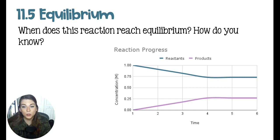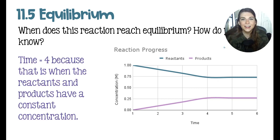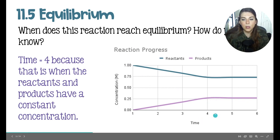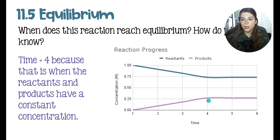For this equilibrium question, we're looking at this graph and answering when does this reaction reach equilibrium and how do you know? In this graph, we have the blue line representing the reactants and the pink line representing the products. And equilibrium is going to be reached at time equals 4. And that is because this is where the reactants and products level out and their concentration is going to remain constant.